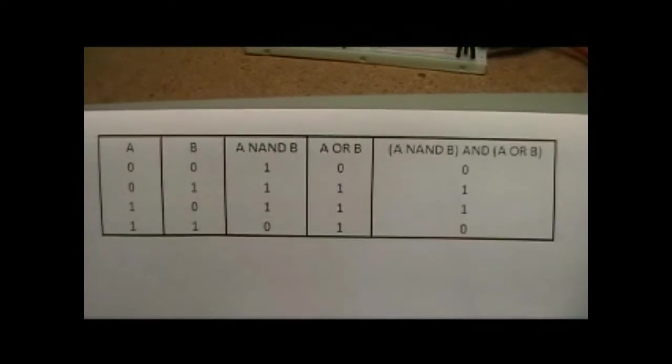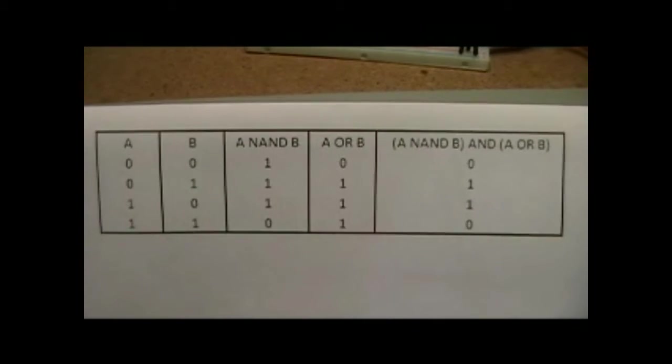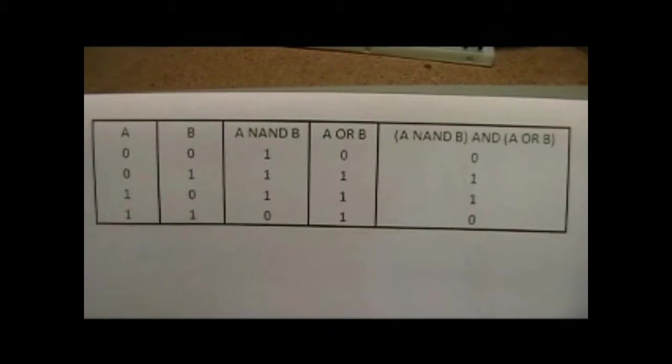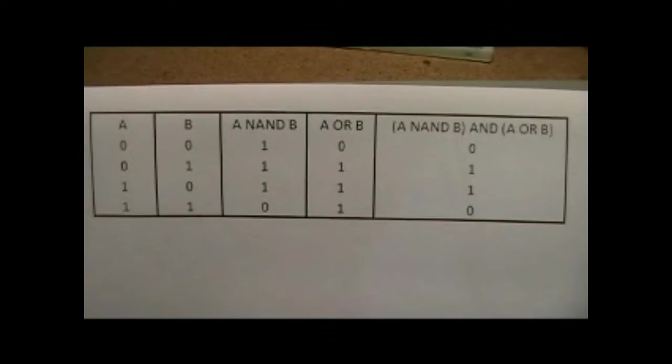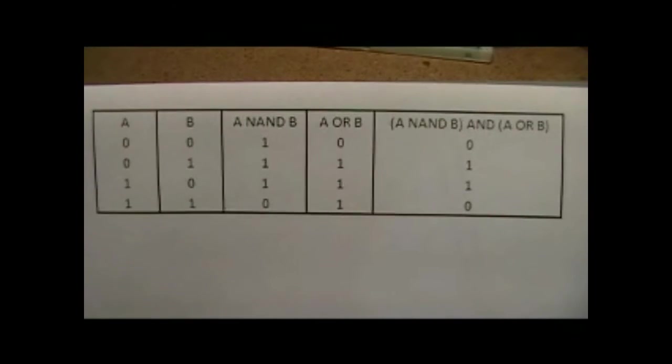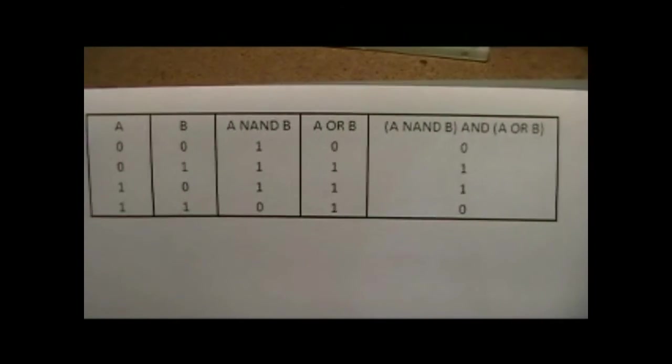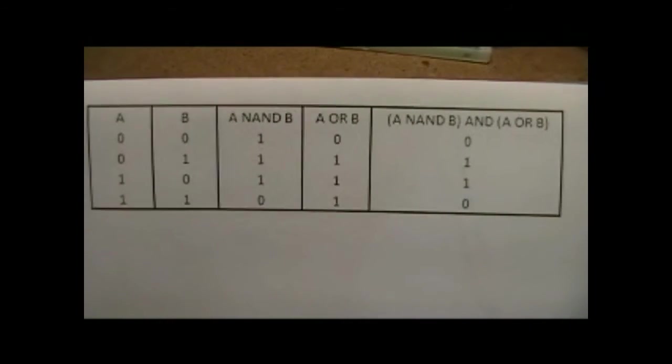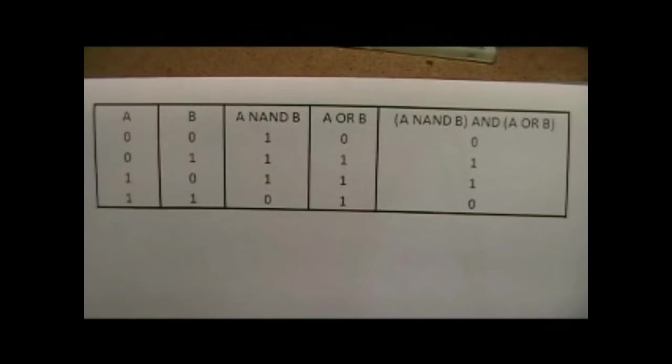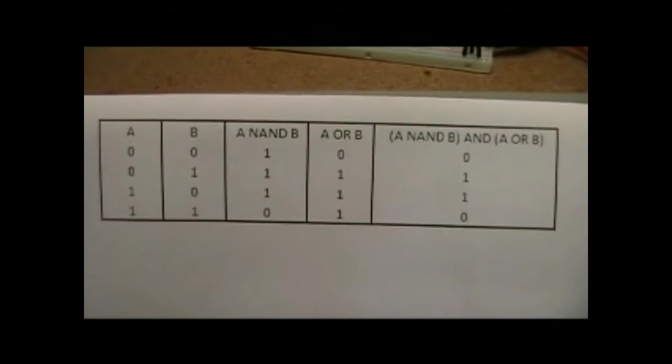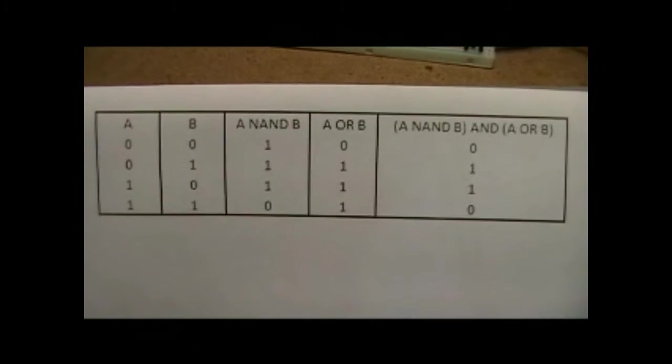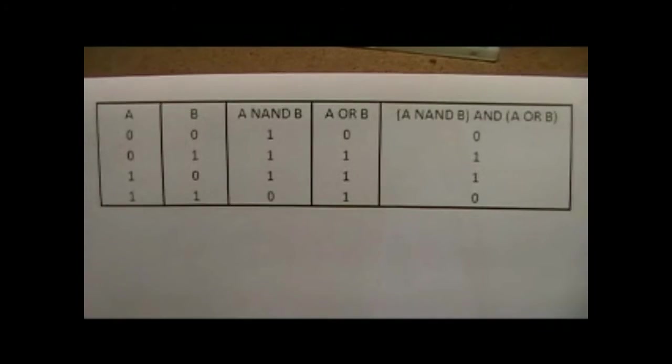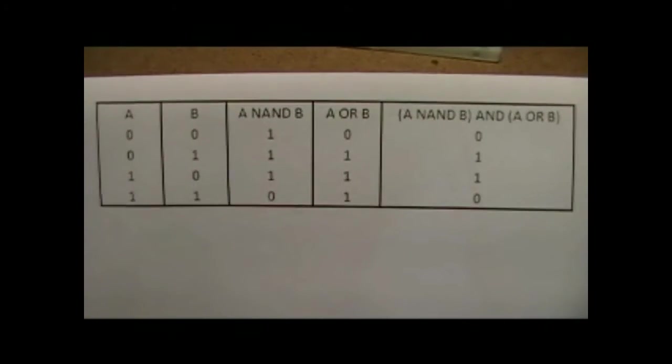And I took advantage of this setup in that the only time I really want output is when one input or the other is on. If you look at the A NAND B and the A OR B results you'll notice that the only time those are both on is in the middle basically when either A or B is on. So by ANDing the results of the NAND gate and the OR gate I get exclusive OR. I get a one when and only when A or B is on but not both of them.